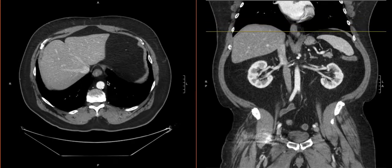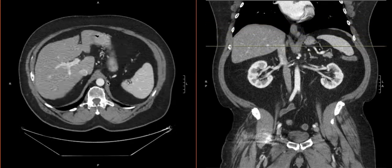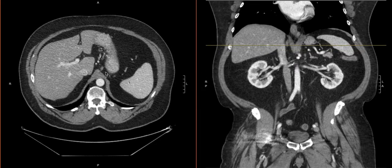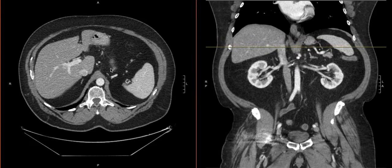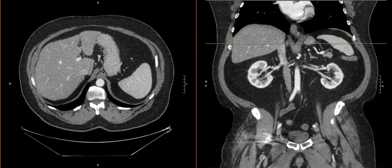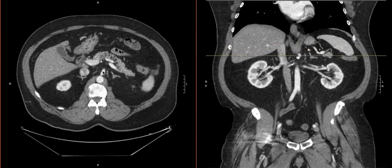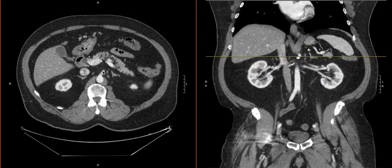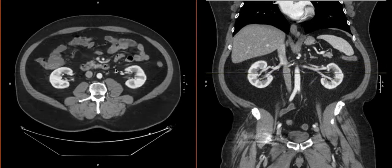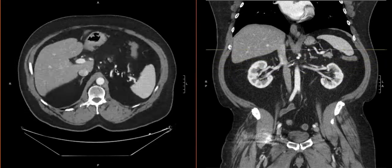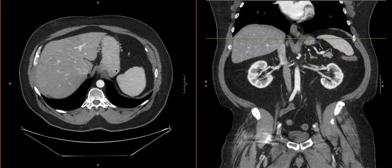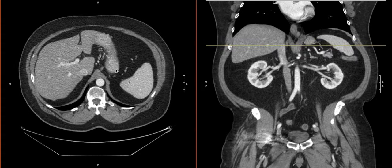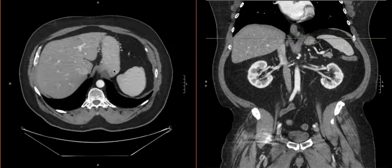We can go even lower, just looking in the center, and again we see something pop out right here — a lymph node right around the stomach. At this point, we can look at different areas. We can look for lymph nodes around the pancreas or other organs in the body, and just go back and forth looking for lymph nodes like this one that pop out at us.